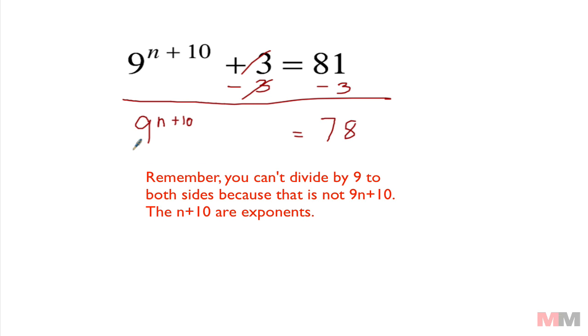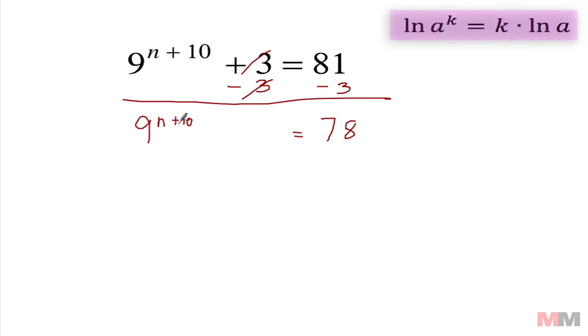Again, you cannot just divide by 9 on both sides. This is pinned to that exponent right here, so we can use the property once again so we don't have to deal with any exponents. I can take the natural log of both sides. Natural log of 9 to the n plus 10 equals natural log of 78. To rewrite this I can write the exponent in the front: (n + 10) times the natural log of 9.